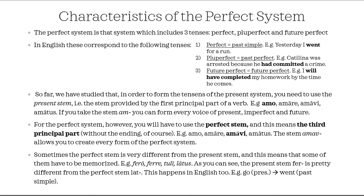As for the future perfect, it has the same name in English too — it's called the future perfect — and it talks about two actions taking place one after the other, but this time in the future. So if I say 'I will have completed my homework by the time he comes,' it means that the first action comes before the second: first I complete my homework, and then my friend comes.